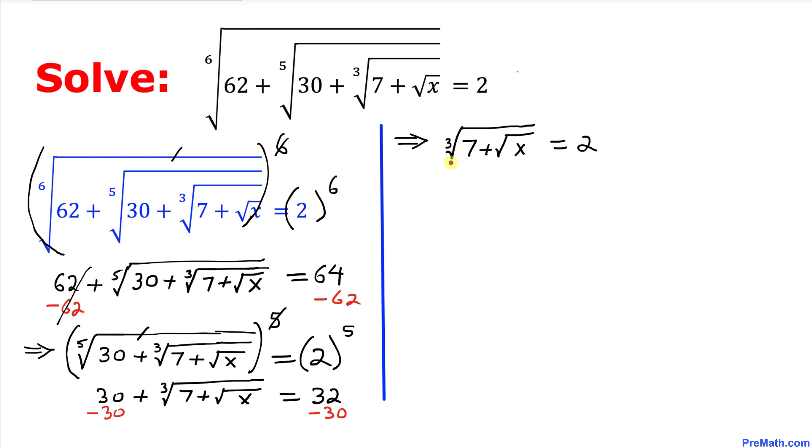So we ended up with the cube root of 7 followed by the square root of x equal to 2, as you can see these 30 and negative 30 they cancel each other out.